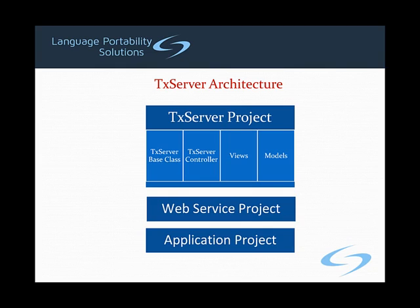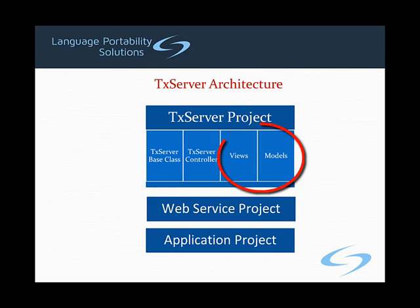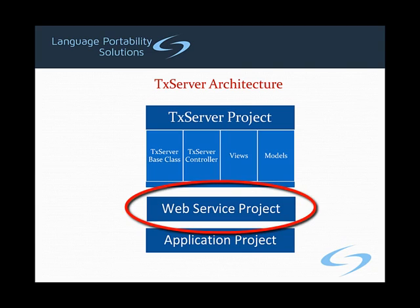The TX server consists of a base class and controller that manage the interactions between the views, models, and application programs that make up the migrated system. When the application was migrated, BMS maps were automatically converted to MVC views with corresponding models. These models bind the data from the views in order to make it available to the application programs. The TX server controller invokes the application programs and passes them the data from the appropriate model via a WCF web service. This separation of function allows for unlimited scalability and also provides numerous deployment options, some of which we will now describe and demonstrate.